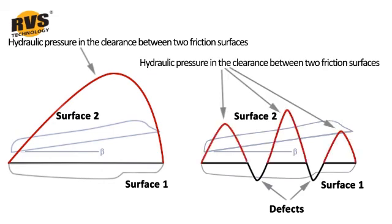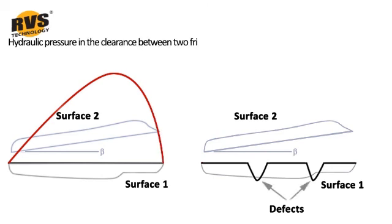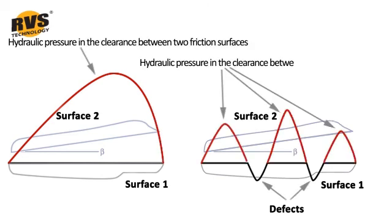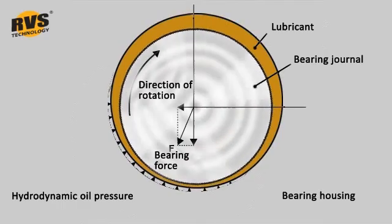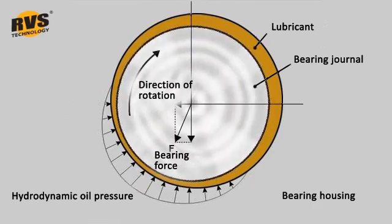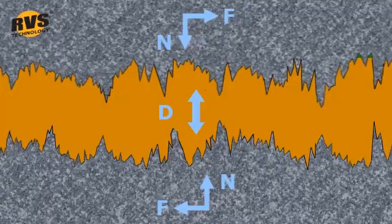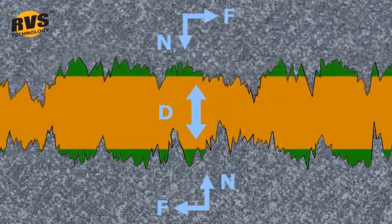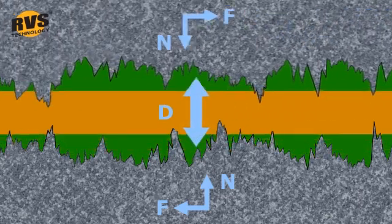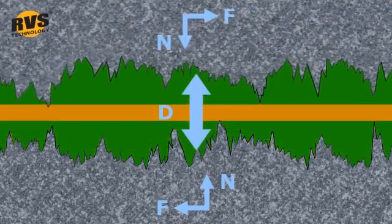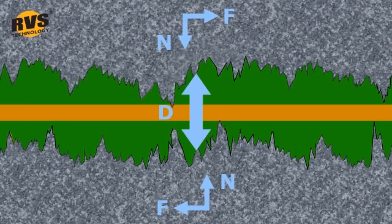The layer created restores wear damage and optimises the mutual travelling trajectories and tolerances to achieve the best possible values. The process is self-regulating and stops when the surface irregularities are fully covered by the ceramic material. With no colliding peaks, there is no heat for the reaction and the production of the new surface stops. Therefore, over-creation of a surface is not possible.